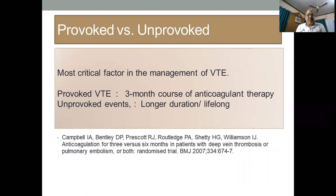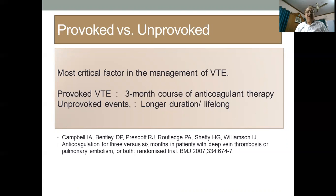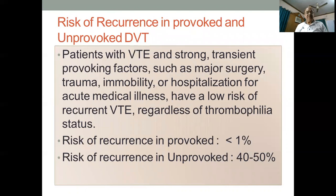DVT can be a provoked DVT or unprovoked DVT. Provoked means it has occurred after some provocation, while unprovoked is without any provocation. If the patient has a provoked DVT, usual anticoagulation is given for about three months, but if it is an unprovoked DVT, we have to give the patient anticoagulation for a longer period, or even sometimes lifelong. If someone has a DVT after major surgery, trauma, immobility, or hospitalization, the chance of recurrence is less than one percent, but if it occurs in an unprovoked situation, it may be even up to 40 to 50 percent.